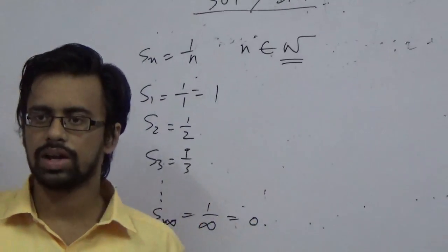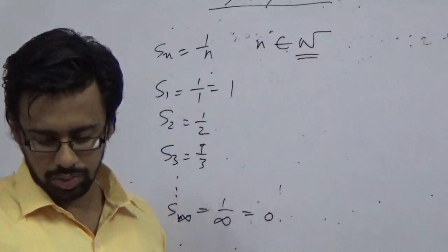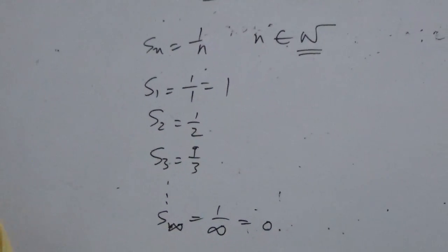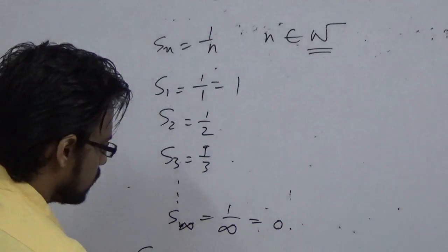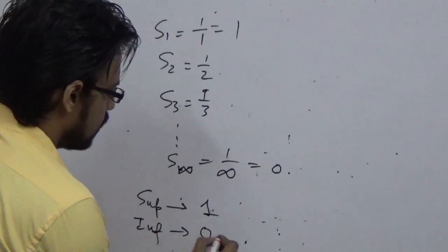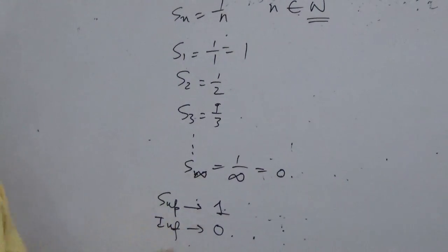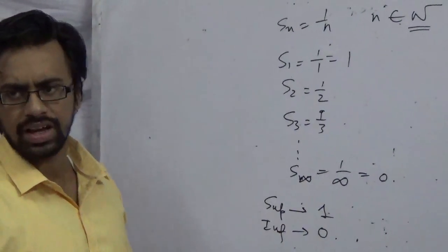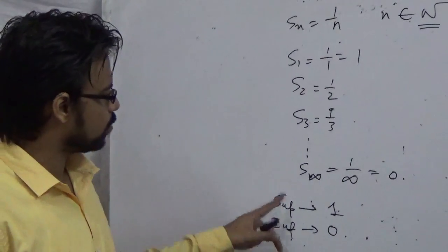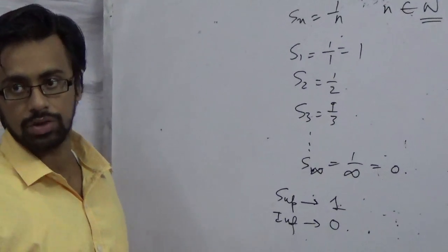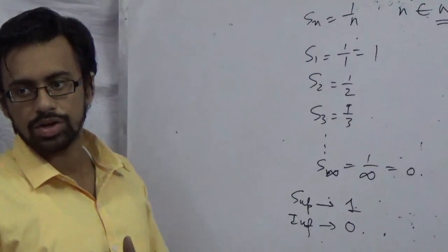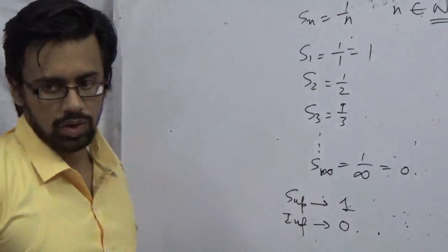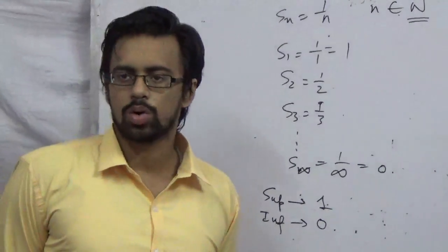So the first part that comes to mind is that the sequence is bounded. Next, we determine Suprema and Infima. The Suprema of the sequence is 1, and the Infima is 0. Infima means when you go to the extended part toward infinity, that gives you 0. In general, whatever the highest value is, put it as Suprema; whatever the lowest value is, put it as Infima — especially for actuarial science, and even for IIT JAM you can do it this way.